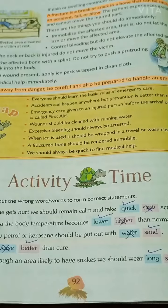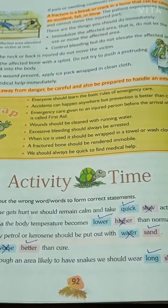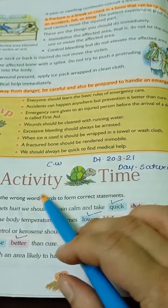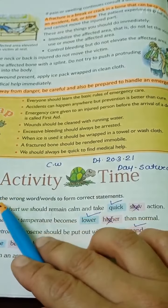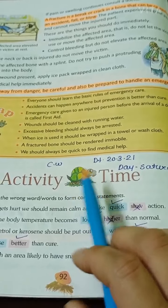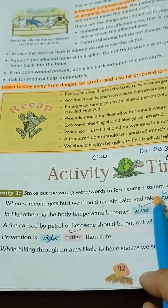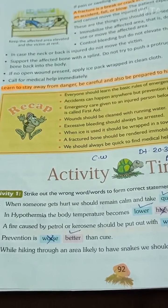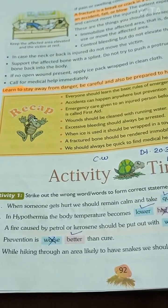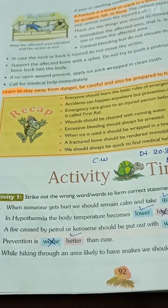Now lesson is over. We will now do activity time. Please take your pencil, write CW. Today's date is 20 March 2021, Day is Saturday. Activity 1: Strike out the wrong words to form correct statements. Number one: When someone gets hurt, we should remain calm and take quick action — cross out 'slow'. जब किसी को चोट लगती है, तो हमें शांत रहना चाहिए और quick action लेनी चाहिए।